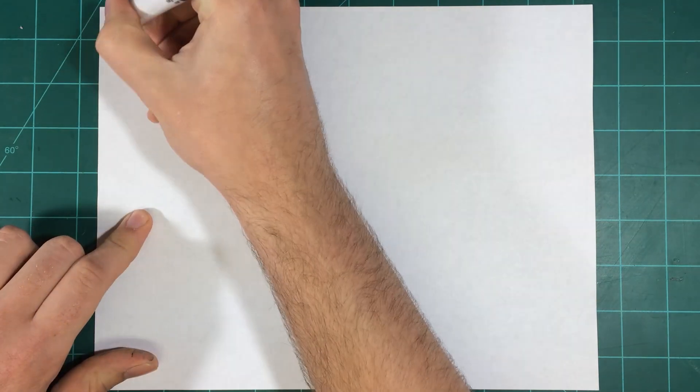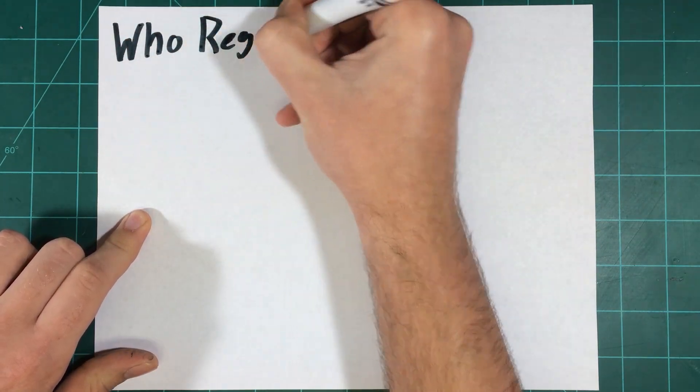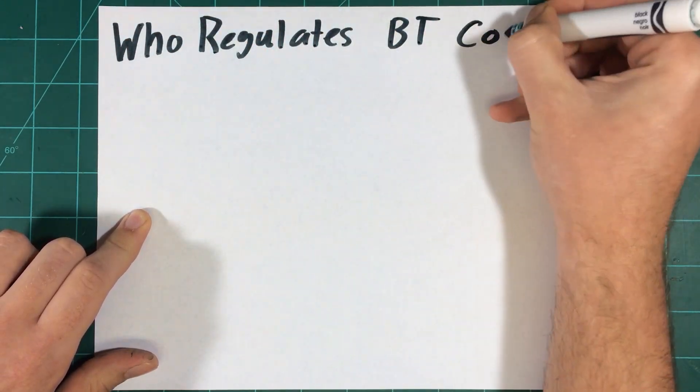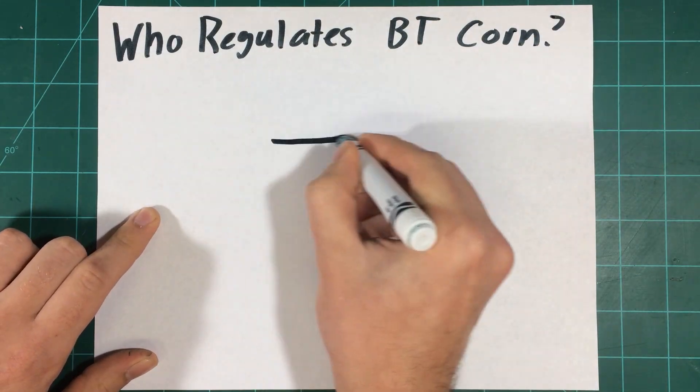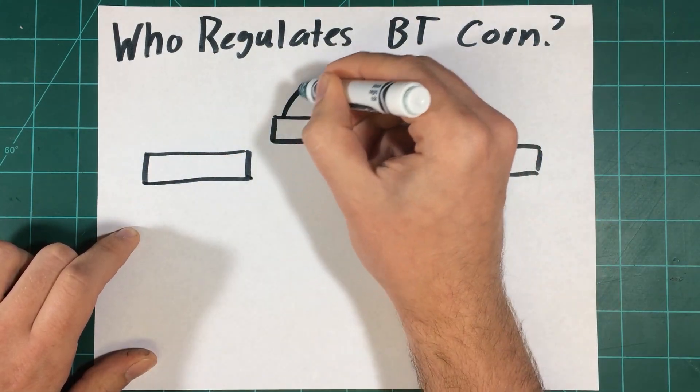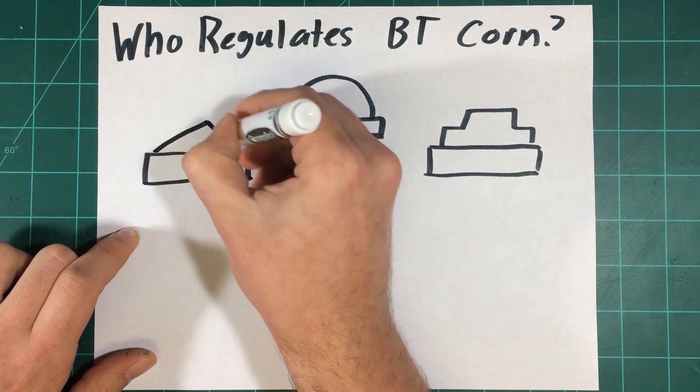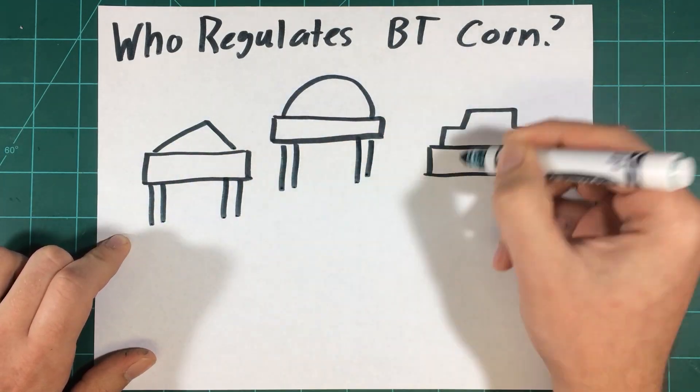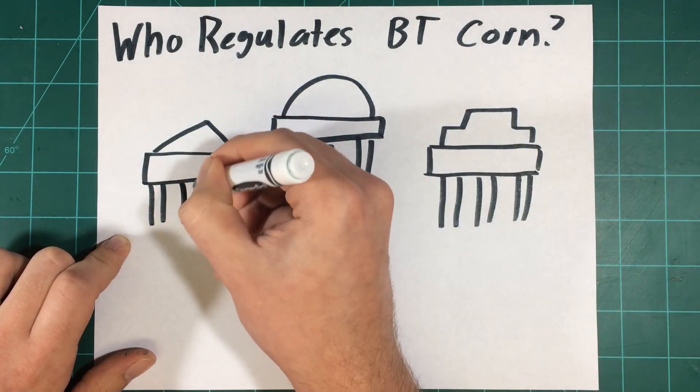So who regulates these products, and what government agencies are involved? Keep in mind, this is an American production, so we will only be addressing regulations in the USA. There are three separate government agencies that regulate the commercial production and consumption of BT crops and GMOs in general.